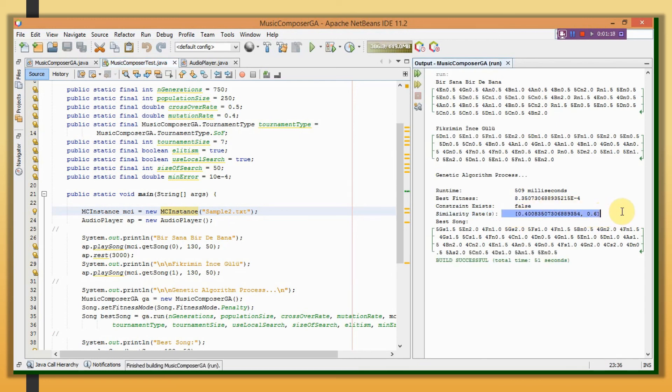As you see, the similarity rates are close to the desired similarity rates, which were 0.4 and 0.6. However, when we give similarity rates such that one of them is very dominant, like 0.8 and 0.2, the produced song has more distant similarity rates, because two songs in the text file have some same notes as well.